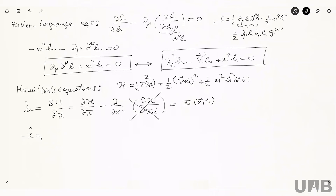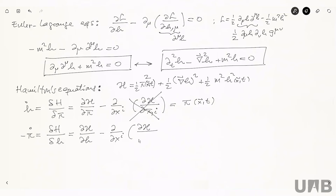The second Hamilton equation is -π̇ = δH/δh, which written in terms of the Hamiltonian density is ∂h/∂h - ∂_i(∂h/∂(∂_ih)). This is the same formal structure as the discrete case — that's why functional derivatives are useful, they're easy to remember.